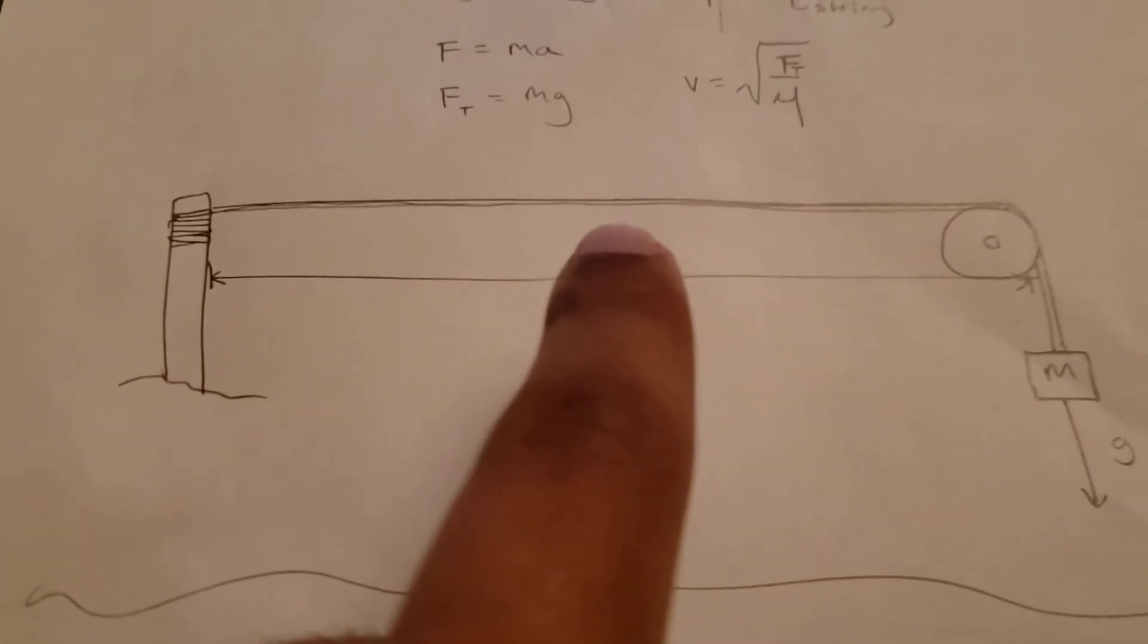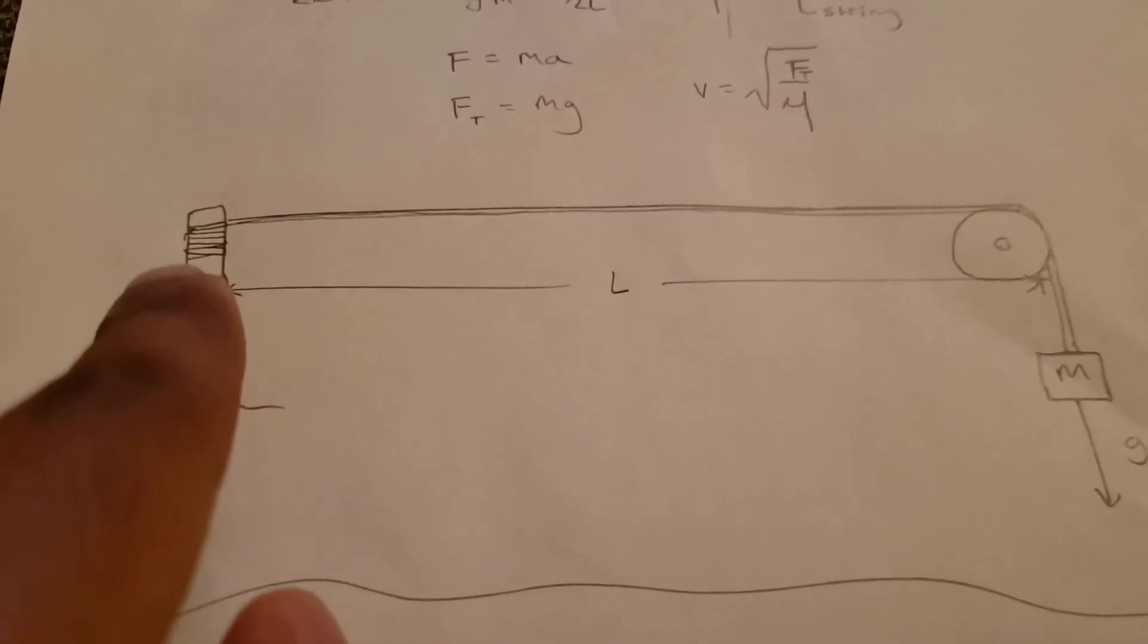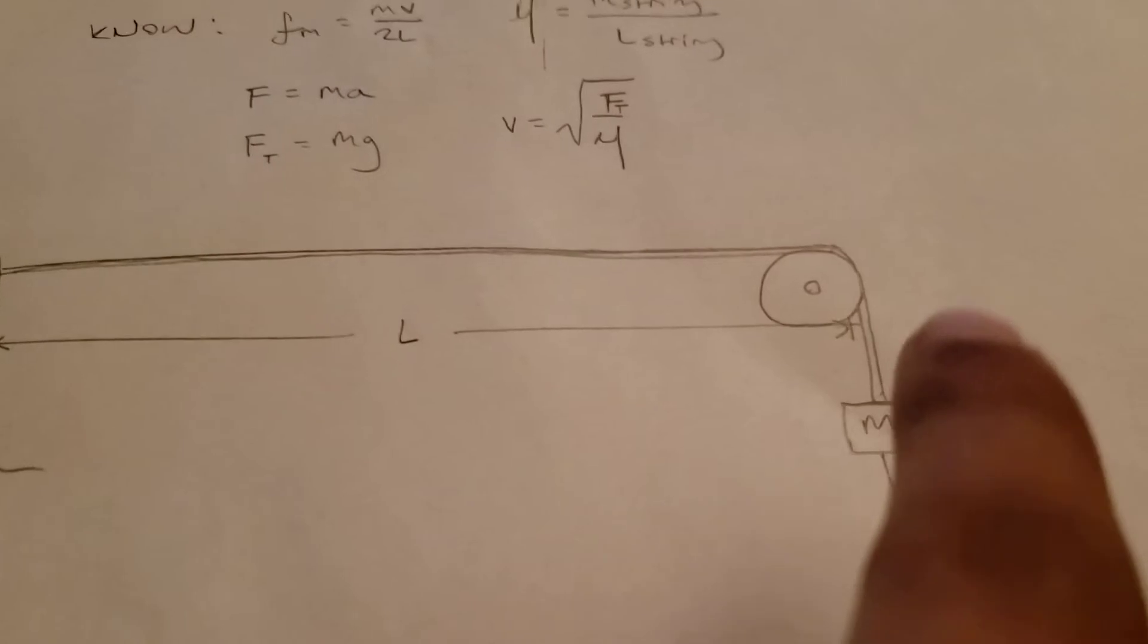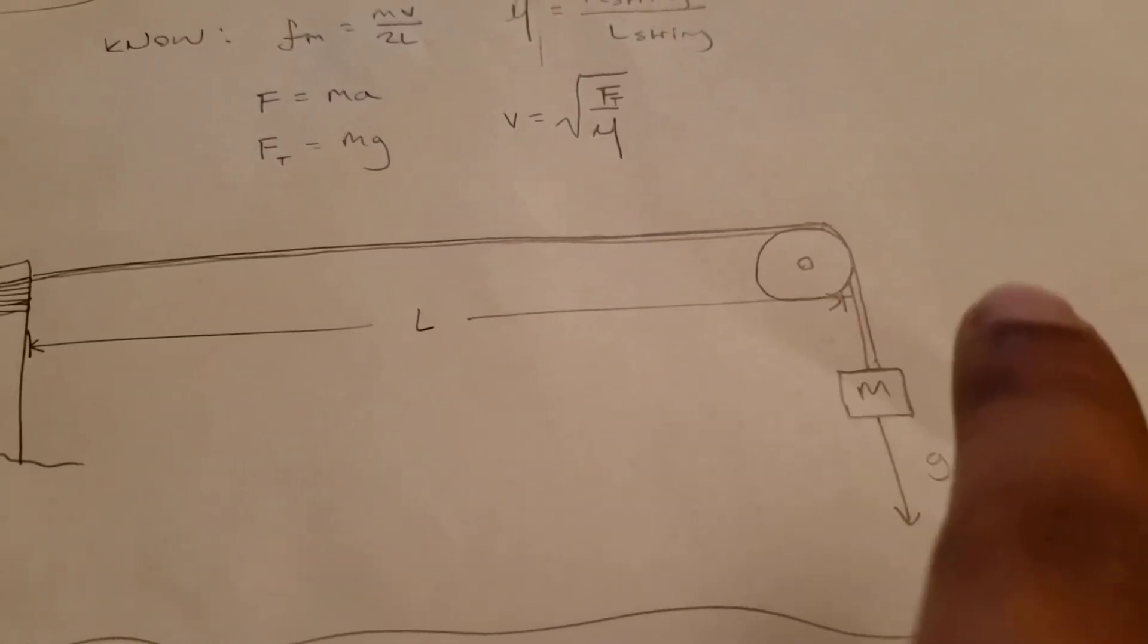So, I drew a picture here to kind of bring it all together. Basically we have the rope here fixed at one point, stretched over a length L horizontally, and then hung over a pulley with the mass hanging on the end.